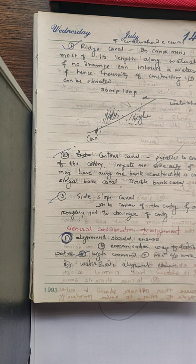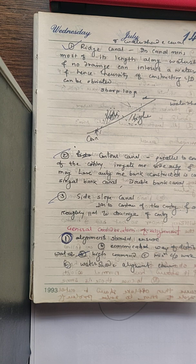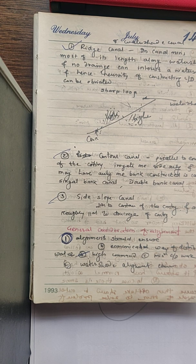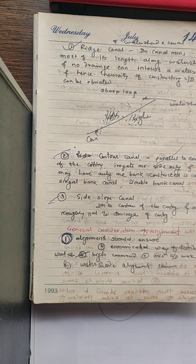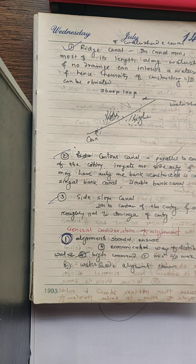Then, alignment should be such that there will be a minimum number of CD works — that is, minimum number of cross-drainage works. A channel will definitely cross a road and a nala, and during this crossing we will have to construct some structure so that we can carry that canal to the other side.